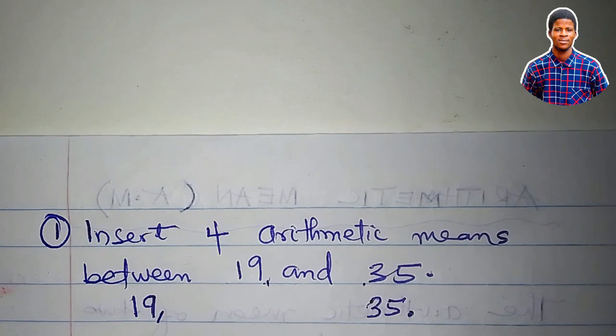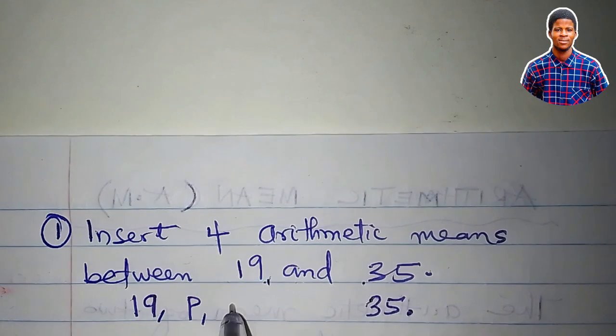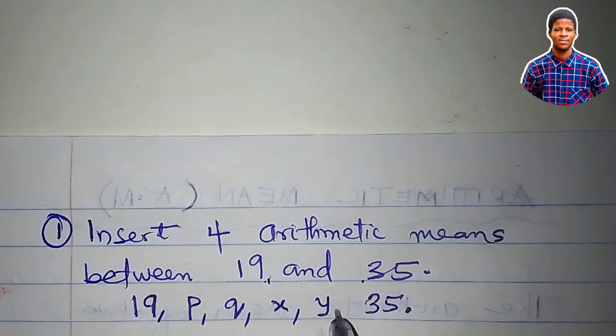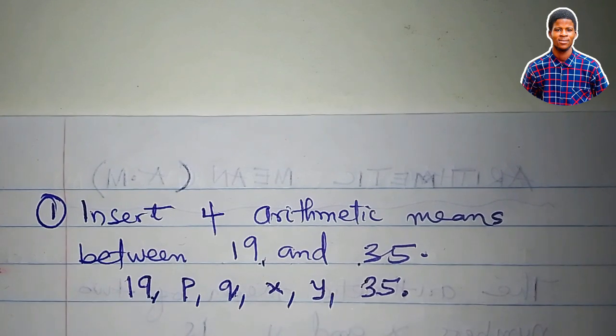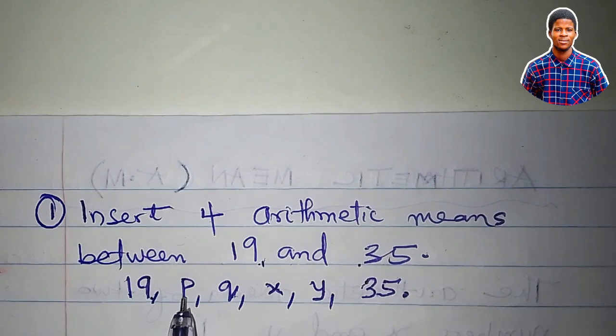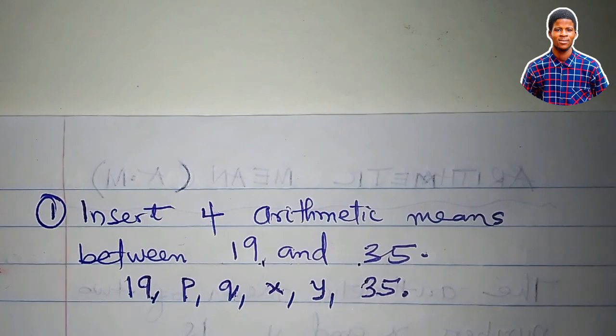In between 19 and 35, we want to insert 4 numbers. Let's say the numbers are P, Q, X, and Y. So we now have a sequence of six terms. The arithmetic means here are P, Q, X, and Y. How do we get them? Watch till the end.